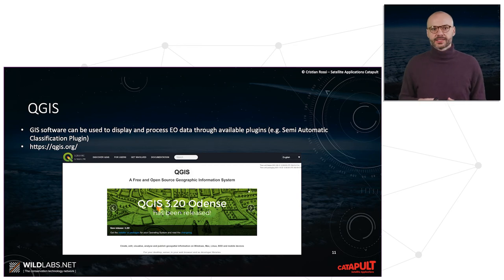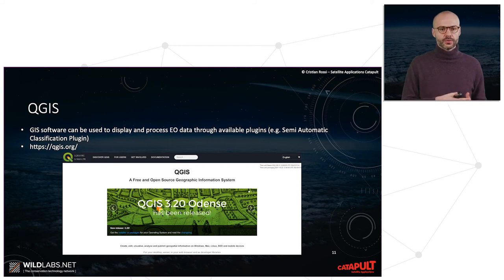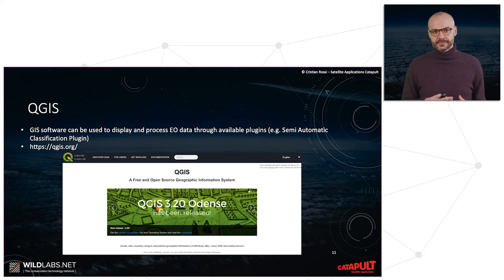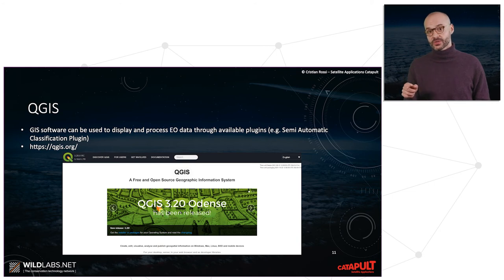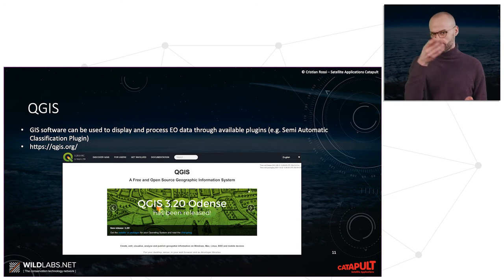GIS is an important part of using Earth observation and geospatial data to create maps. One of the most popular open-access GIS software tools is QGIS, which is freely available. It's worth noting that there are several plugins suited to QGIS for Earth observation analysis, such as the Semi-Automatic Classification Plugin for land classification.